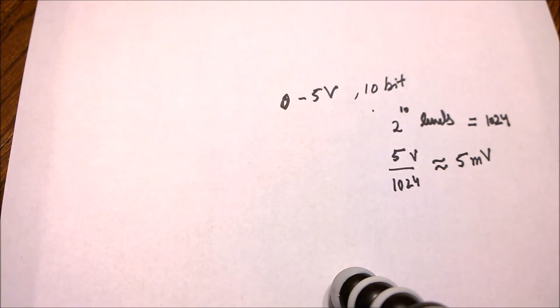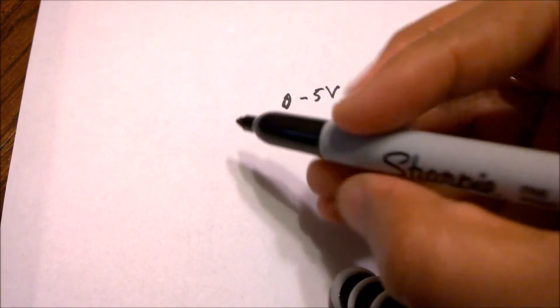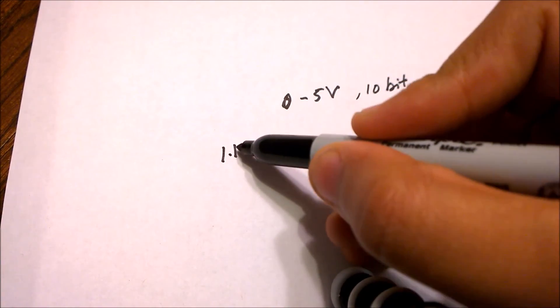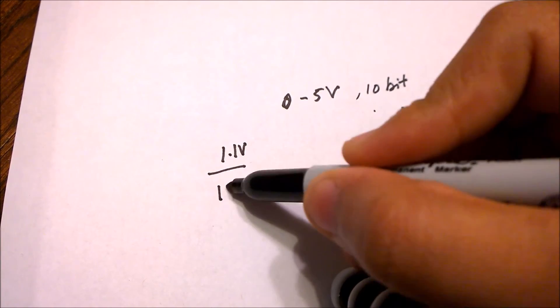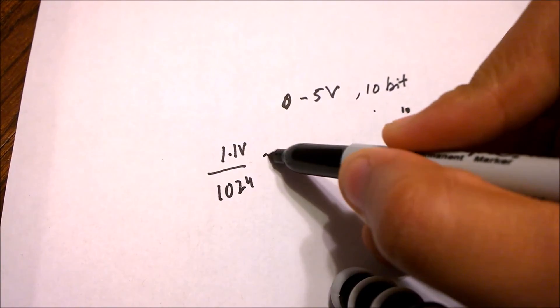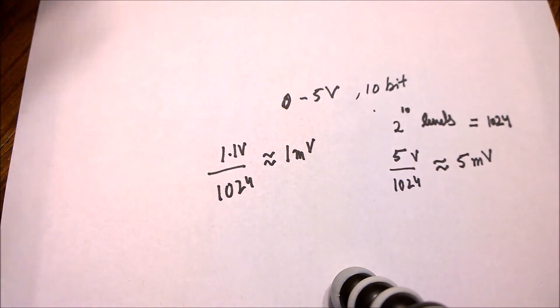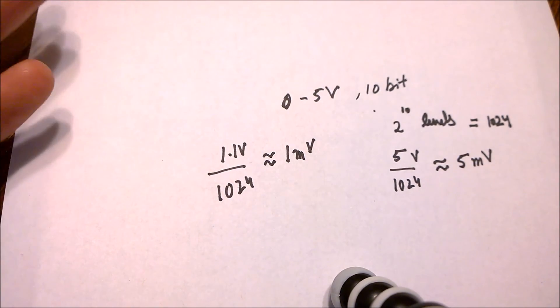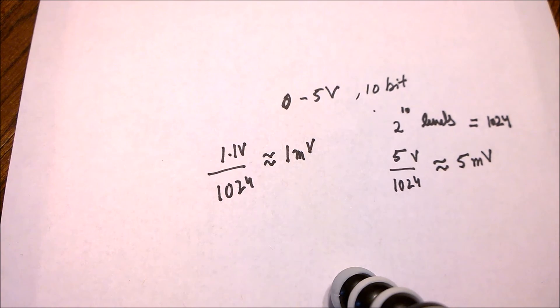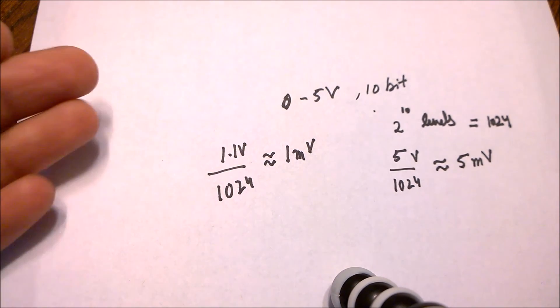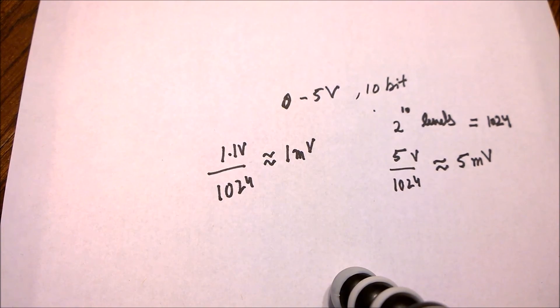Now if the same 2 raised to 10 levels are divided across 1.1 volt range, then our resolution will be nearly equal to 1 millivolt. So by changing our internal reference from default 5 volt to 1.1 volt, we can increase our ADC resolution by 5 times.